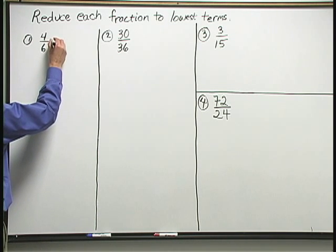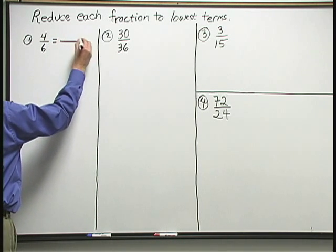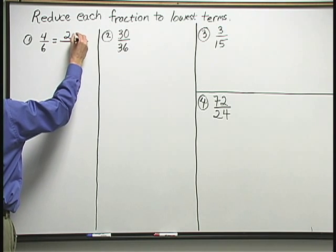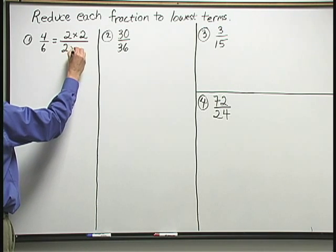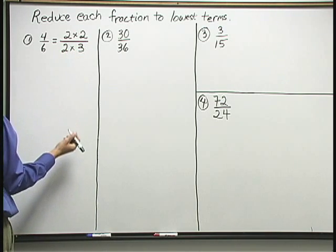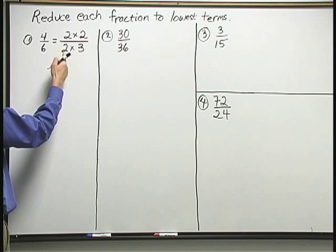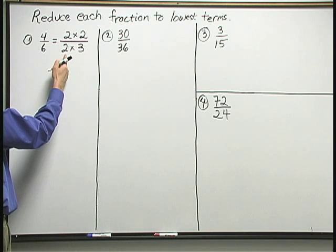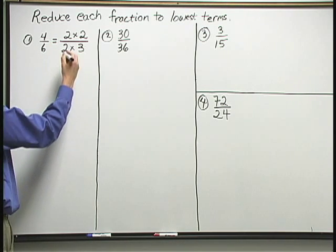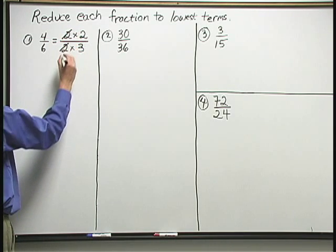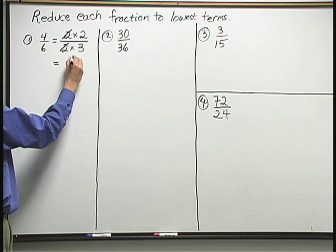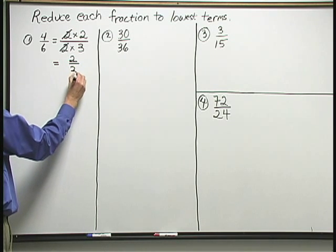I can rewrite the 4 as 2 times 2. I can rewrite the 6 as 2 times 3. Because I see the same number above and below here, I can cancel. I can cancel one of the 2s above with the 2 below. And that leaves me with 2/3.